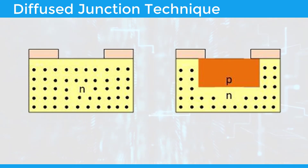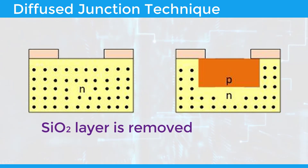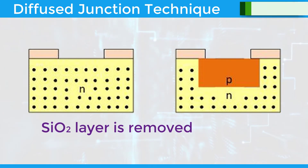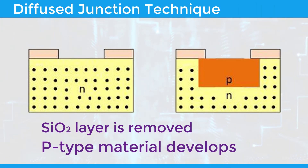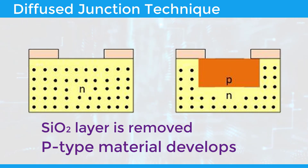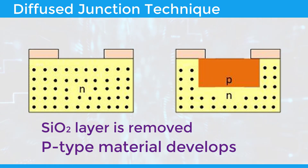For making the base region, the acceptor-type impurities are diffused into the wafer. For this, the SiO2 layer is removed from the area from which the base is to be formed. The boron impurities are exposed in the form of vapor and the impurity is added to the depth of the material as shown in the figure. Thus, the base region of P-type material develops.